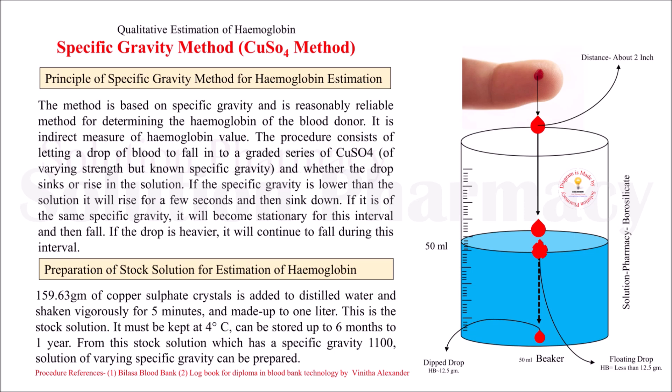Hello friends, welcome to the channel. Today in this video we will show you the indirect technique of hemoglobin estimation, that is the specific gravity method, which is also known as the copper sulfate method for the estimation of hemoglobin.